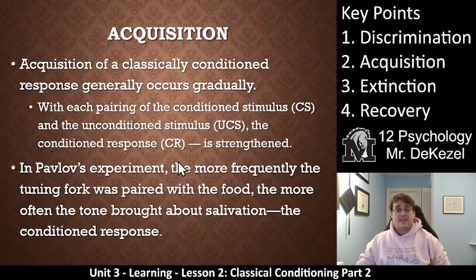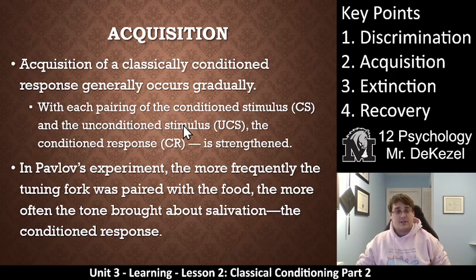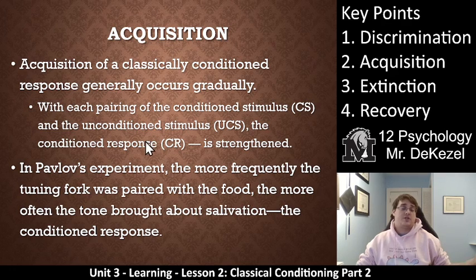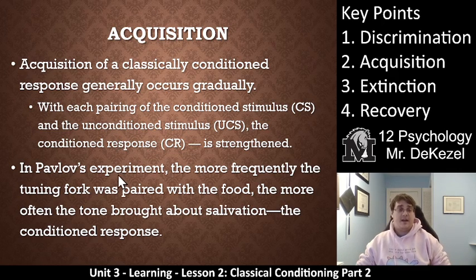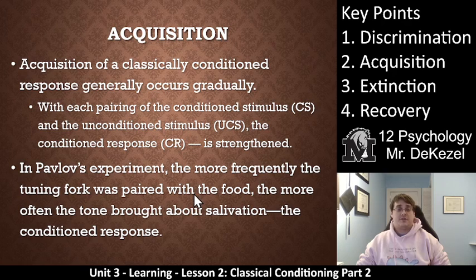Acquisition of a classically conditioned response generally occurs gradually, with each pairing of the conditioned stimulus with the unconditioned stimulus strengthening the conditioned response. Acquisition is a gradient — you can acquire it a little bit or acquire it a lot. In Pavlov's experiment, the more frequently the tuning fork was paired with the food, the more often the tone brought about salivation as the conditioned response.